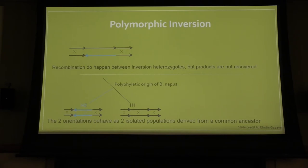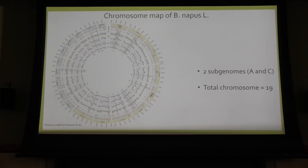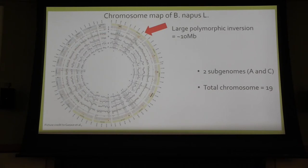H1 shows the ancestral lineage, and H2, represented in blue, shows the derived character of the lineage. For studying polymorphic inversion of Brassica napus, we gathered 16 samples worldwide and mapped a chromosome map of Brassica napus. There are two subgenomes with a total of 19 chromosomes — blue showing chromosome A and orange showing chromosome C. I studied specifically chromosome C2, which has a large polymorphic inversion. Based on this chromosome map, we gathered primer data for studying this putative polymorphic inversion.